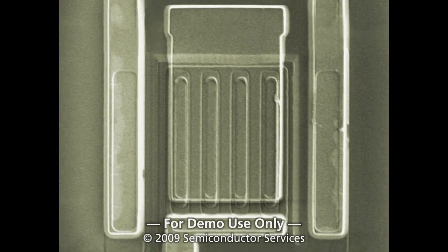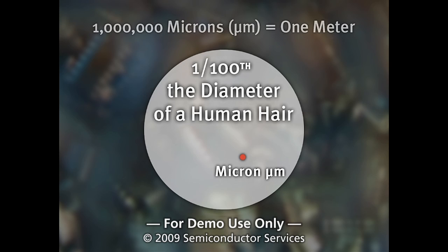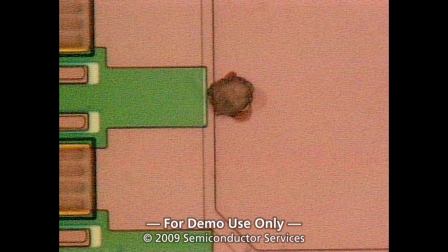Fabricating semiconductor devices involves the addition of very thin layers of materials that are etched into fine patterns that have extremely small dimensions. There are one million microns in a meter. A micron is approximately one one-hundredth the diameter of a human hair. Imagine a piece of dust one one-thousandth the diameter of a human hair and you will have an idea of the size of particle that can destroy products manufactured in semiconductor cleanrooms.